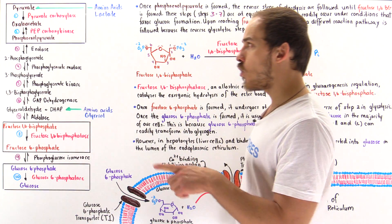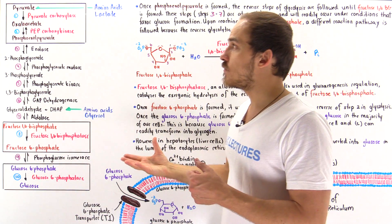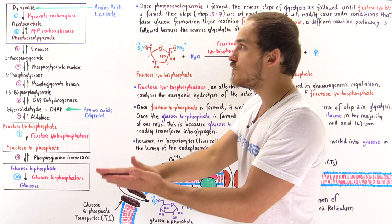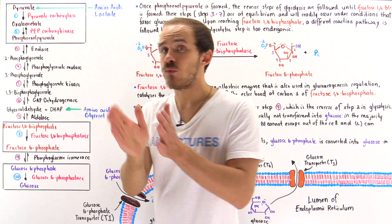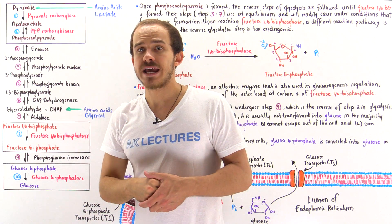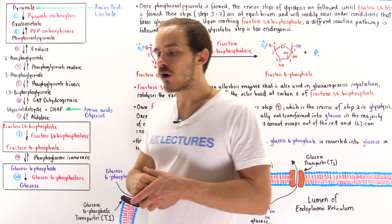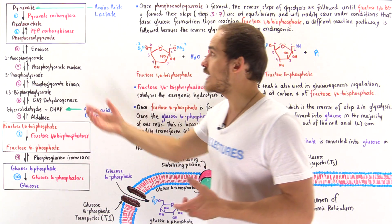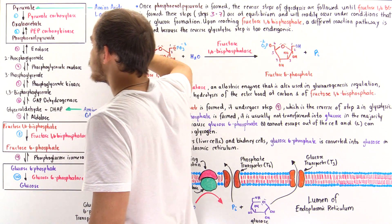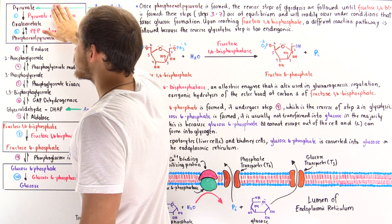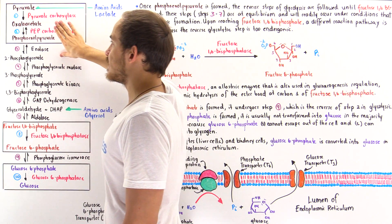Before step number two takes place, the oxaloacetate is transformed into malate, which then moves into the cytoplasm. The malate is transformed back into oxaloacetate within the cytoplasm, and then step number two takes place, catalyzed by PEP carboxykinase — where PEP stands for phosphoenolpyruvate — forming phosphoenolpyruvate. Step one takes place in the mitochondrial matrix; step two takes place in the cytoplasm.